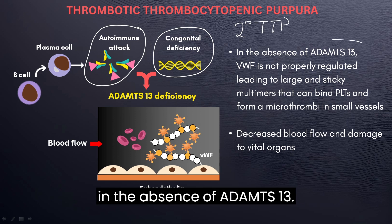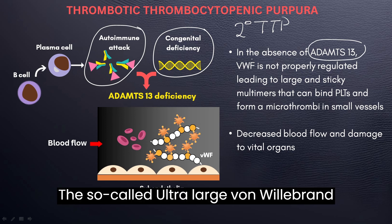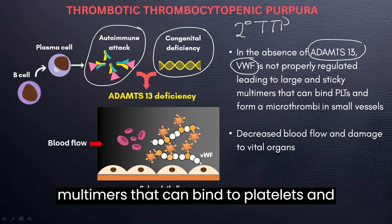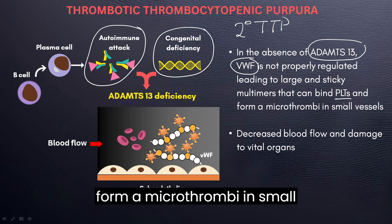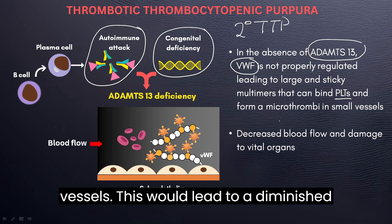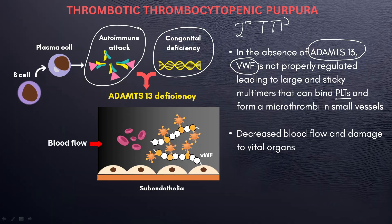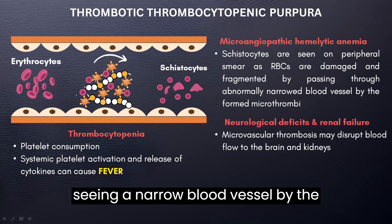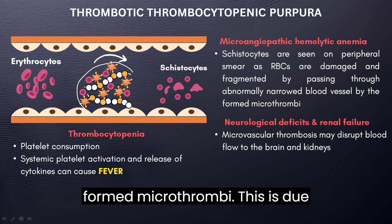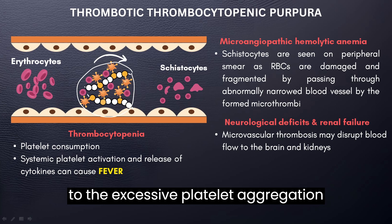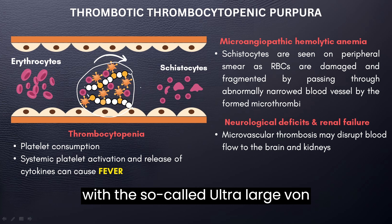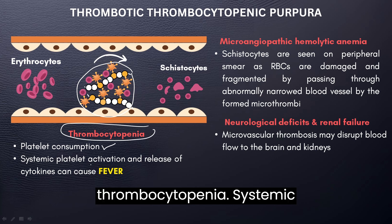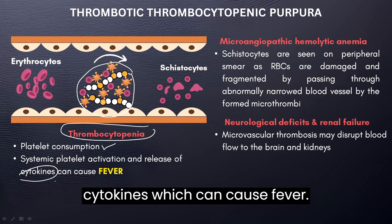In the absence of ADAMTS13, the ultra-large von Willebrand factor is not properly regulated. This leads to large and sticky multimers that bind to platelets and form microthrombi in small vessels, resulting in diminished perfusion and damage to vital organs. This excessive platelet aggregation leads to platelet consumption and thrombocytopenia. Systemic platelet activation can also release cytokines, which can cause fever.